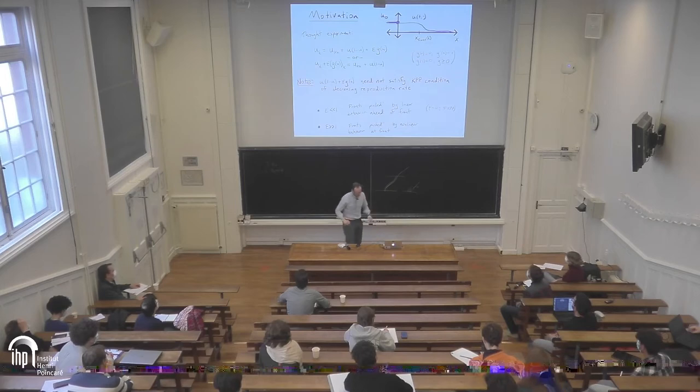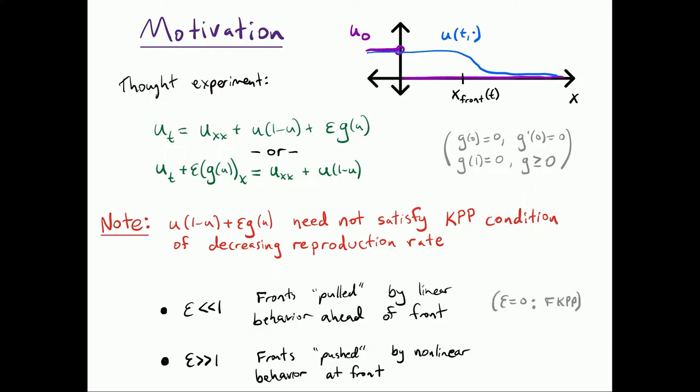Let's start by just doing a little thought experiment. Take Fischer KPP, that very simple reaction diffusion equation, and add a little epsilon times another reaction term that has an effect. When epsilon is zero, this is Fischer KPP. When you increase epsilon just a little bit, you still satisfy this KPP condition of decreasing reproduction rate.